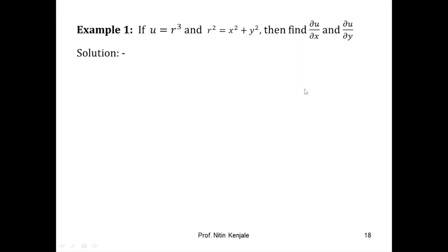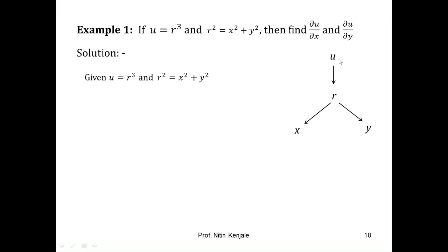Let us first draw a tree diagram. Here u is a function of r, and r is a function of x and y, so u becomes a function of a function. Therefore, ∂u/∂x = du/dr · ∂r/∂x.